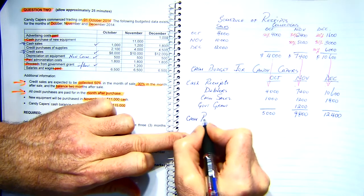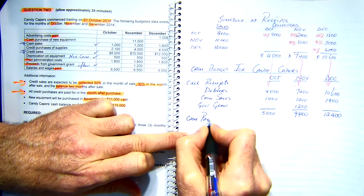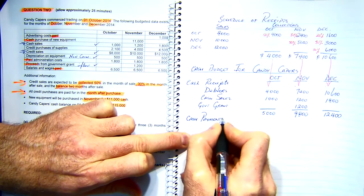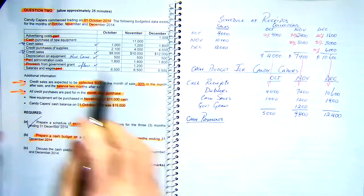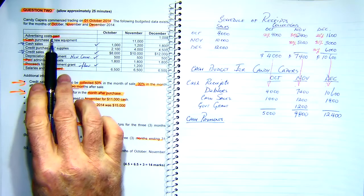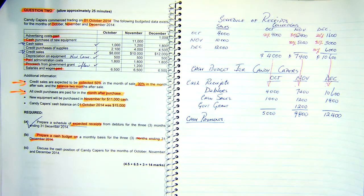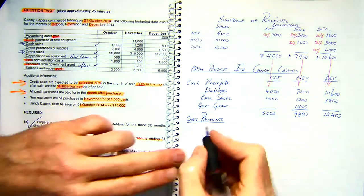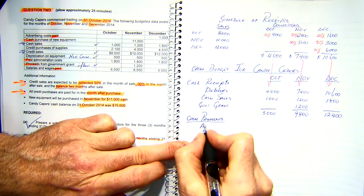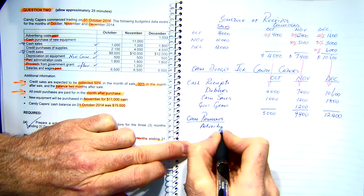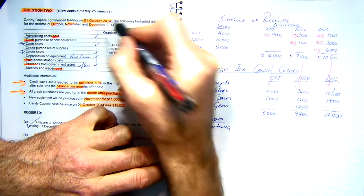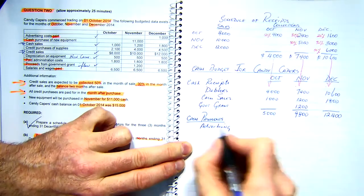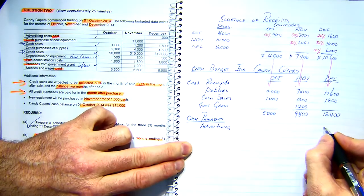Next I'm looking at my cash payments — that's everything else, and I'm just going to go from the top of my list because it's easier. First up is advertising: $1,000, and that's in December.